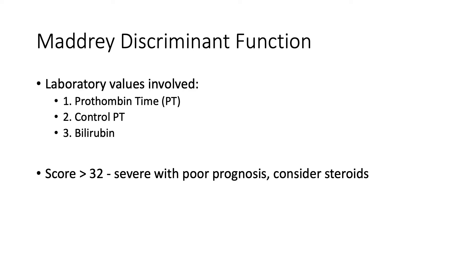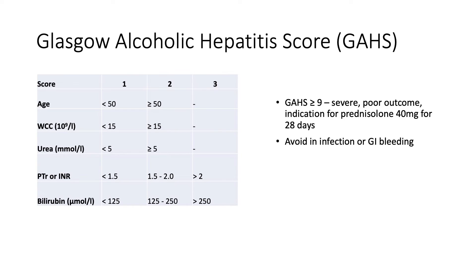Traditionally, the Maddrey discriminant function was used, using prothrombin time and bilirubin, with a score of 32 or greater suggesting poor mortality. More recently, the Glasgow Alcoholic Hepatitis Score is found to have better discrimination for those with higher mortality. This score consists of parameters such as age, white cell count, urea, bilirubin, and prothrombin time. Usually a GAS score of nine or greater indicates poor outcome and is an indication for steroid treatment.